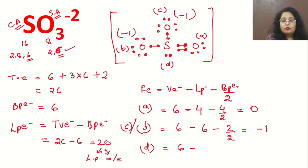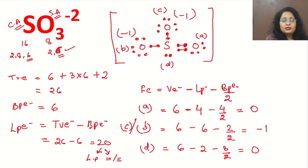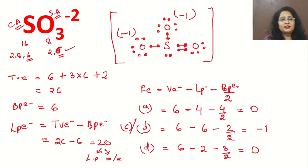For sulfur D: valence electrons = 6, lone pair electrons = 2, bond pair electrons = 8. Formal charge = 6 − 2 − (8/2) = 6 − 2 − 4 = 0. So sulfur has zero formal charge, oxygen A has zero, and oxygens B and C each have −1 charge — giving a total of −2, consistent with SO₃²⁻. This is the correct Lewis dot structure of SO₃²⁻. If you have doubts, write in the comments. Thank you.